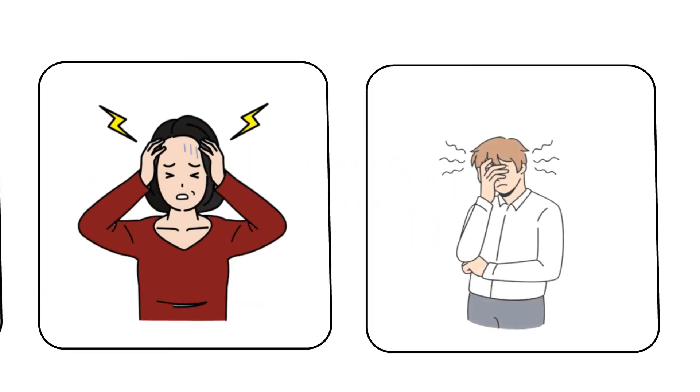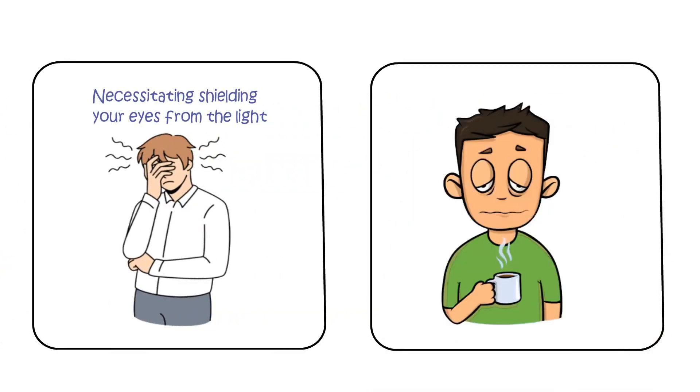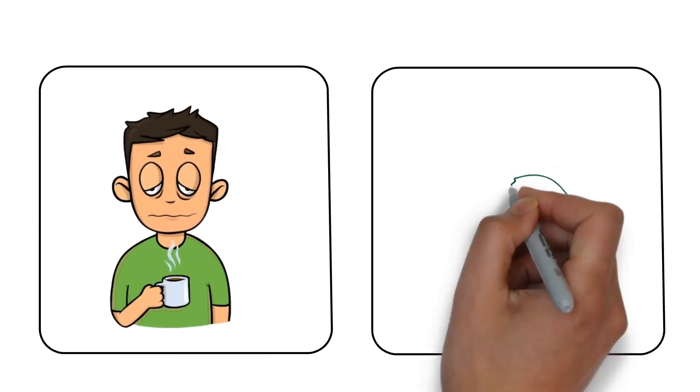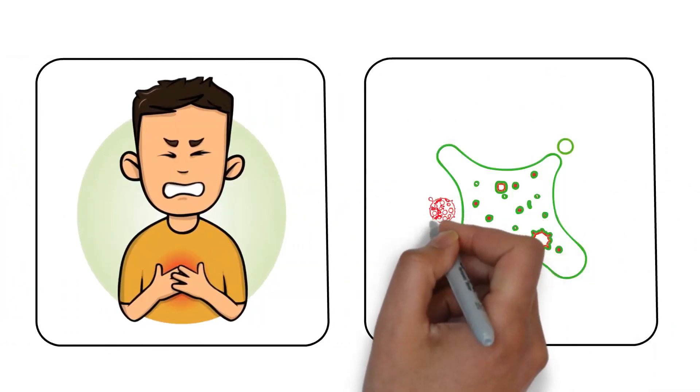A progressively worsening headache. Not liking bright lights, necessitating shielding your eyes from the light. Drowsiness and/or confusion. Repeated episodes of vomiting. Chest pains. Coughing of blood or phlegm stained with blood, sputum.